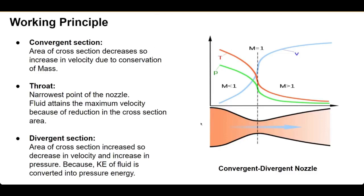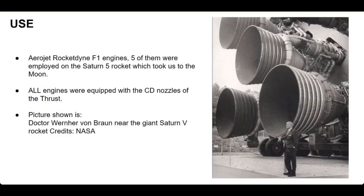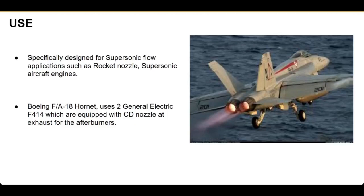This is how the convergent-divergent nozzle gives us maximum thrust to propel our rocket into space. Let's see the practical applications of the CD nozzle. As we can see here is the massive Saturn V rocket that took Neil Armstrong and Buzz Aldrin to the Moon and created history. It was equipped with five Rocketdyne F-1 engines — these massive beasts — and as we can see, these are all convergent-divergent nozzles. This legendary rocket was designed by Dr. Wernher von Braun.